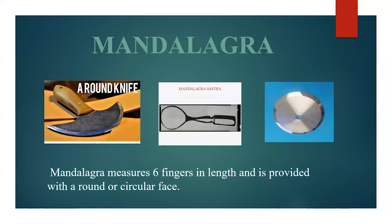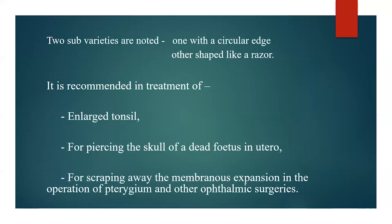Now the description of individual Shastra. The first one is Mandalagra. Mandalagra measures 6 fingers in length and is provided with a round or circular face, hence the name Mandalagra. There are two sub-varieties: one with a circular edge and another shaped like a razor. Its use is mainly indicated in the treatment of enlarged tonsils, for piercing the skull of a dead fetus, for scraping away the membranous expansion in surgeries for pterygium, and also in other ophthalmic operations.